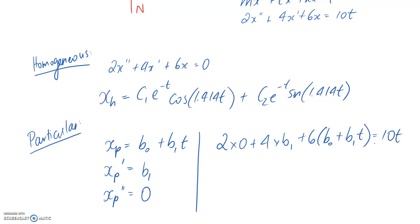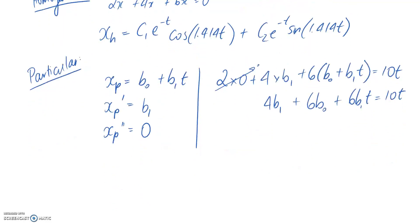So we can simplify this down a little bit. Two times zero is going to go away. And we're left with 4b1. If I expand the brackets here, we've got 6b0 plus 6b1t has to be equal to 10t. So what I should be able to do now is I know the number out the front of the t on the left hand side has to equal the number out the front of the t on the right hand side. So I can say that 6b1 has to be equal to 10.